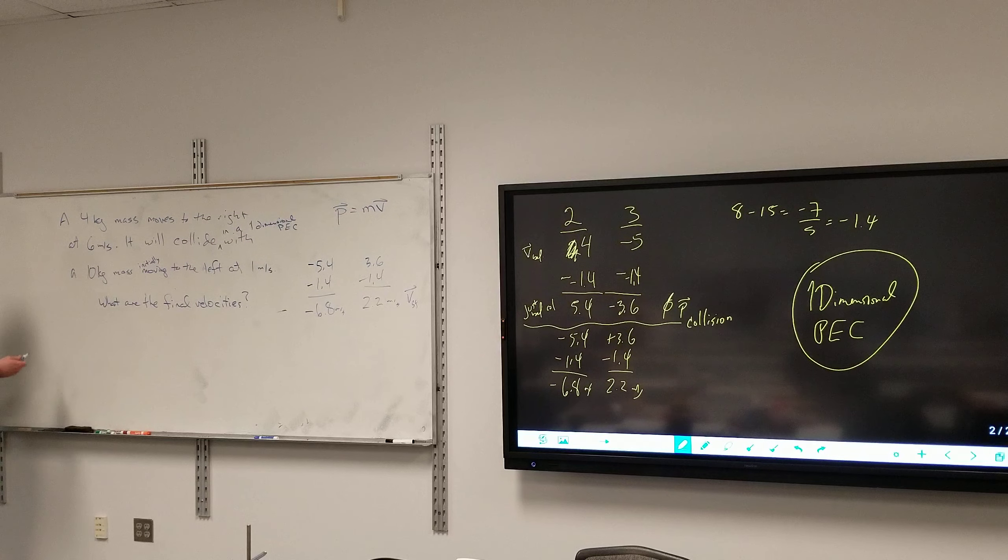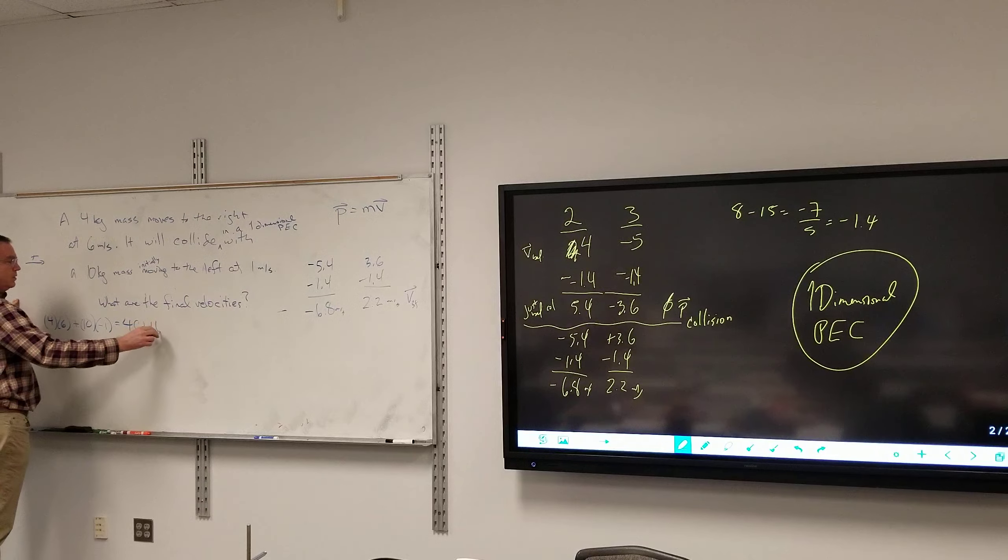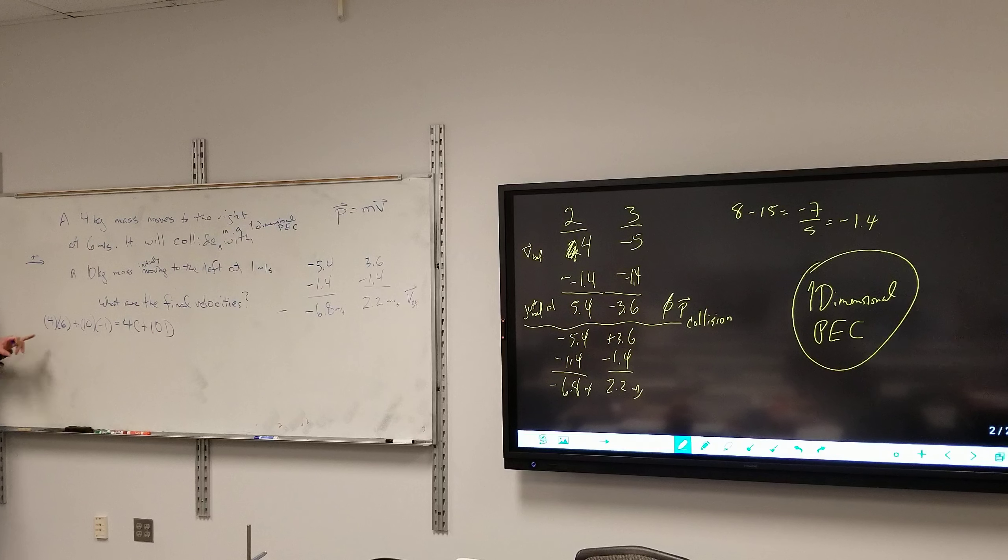Method 1, conservation of momentum. So I got 4, I'm going to make to the right positive. 4 times 6 plus 10 times negative 1 is equal to 4C plus 10D. This is the conservation of momentum.